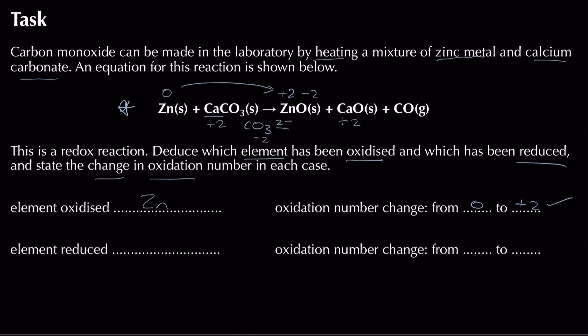Looking at the carbonate ion CO₃²⁻: oxygen is minus two, so all three oxygens give minus six overall, meaning carbon must be plus four to give the overall minus two charge. On the right-hand side in CO, oxygen is minus two so carbon must be plus two. Carbon goes from plus four to plus two — the number is getting more negative — so carbon is reduced, gaining two electrons.